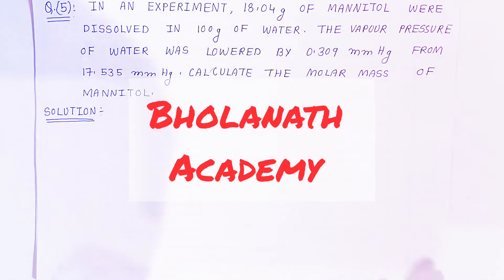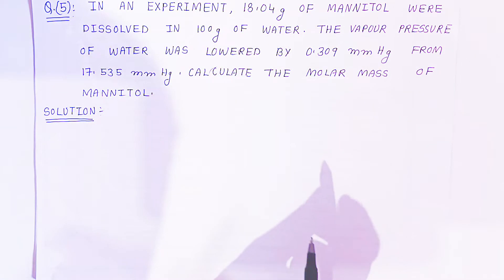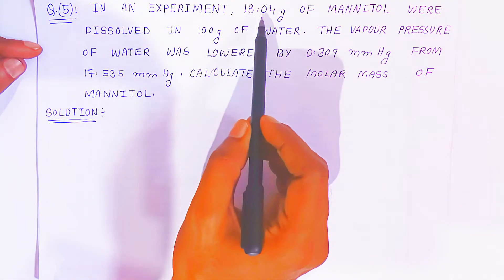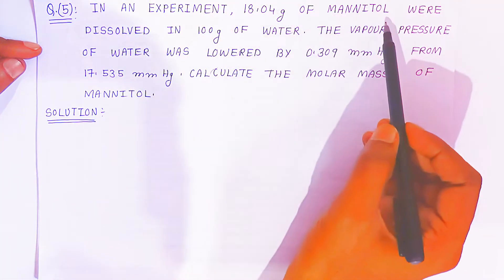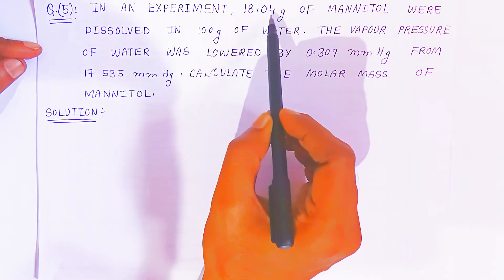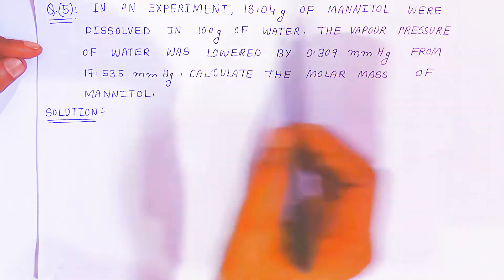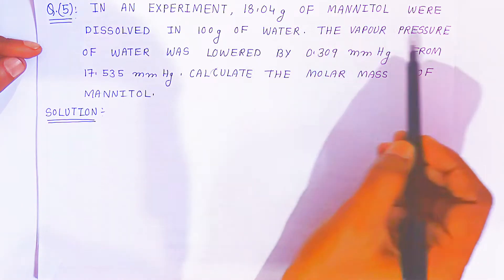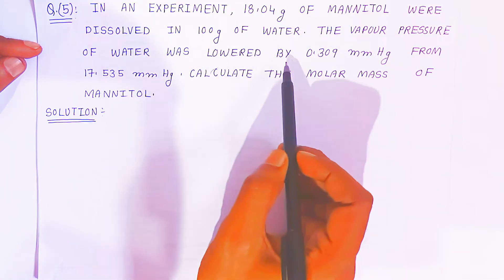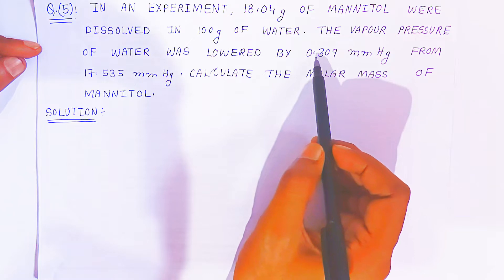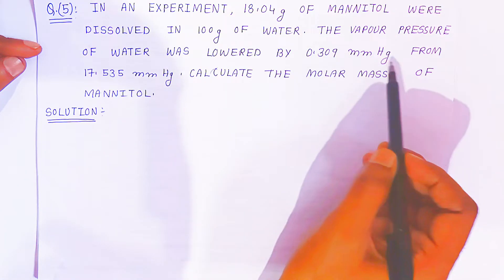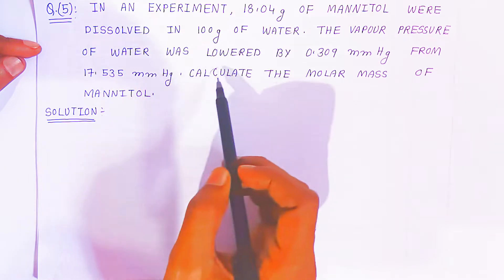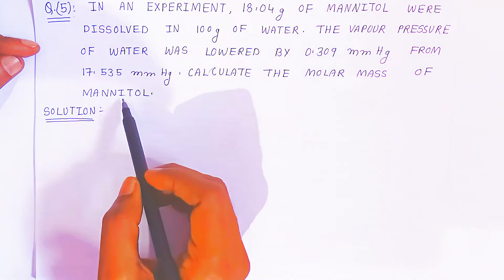Hello students, once again welcome to Bhunanath Academy. In this video we are going to see question number 5. In an experiment, 18.04 gram of mannitol were dissolved in 100 gram of water. The vapor pressure of water was lowered by 0.309 mmHg from 17.535 mmHg. Calculate the molar mass of mannitol.